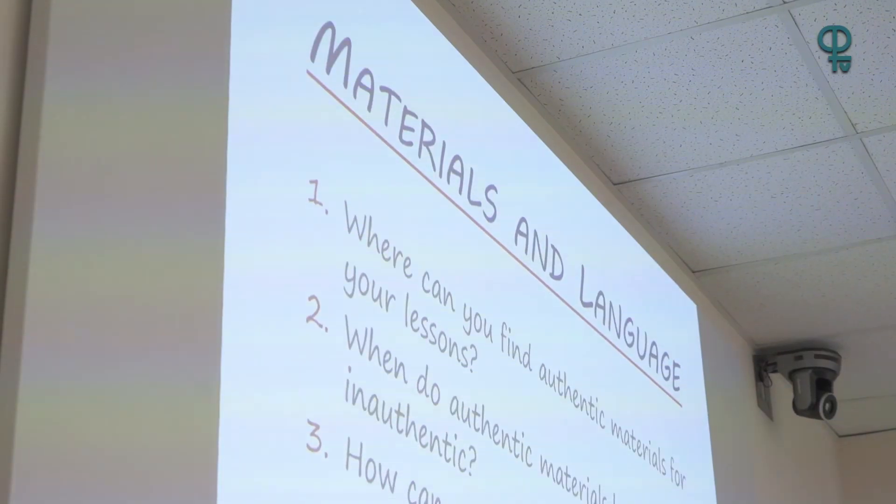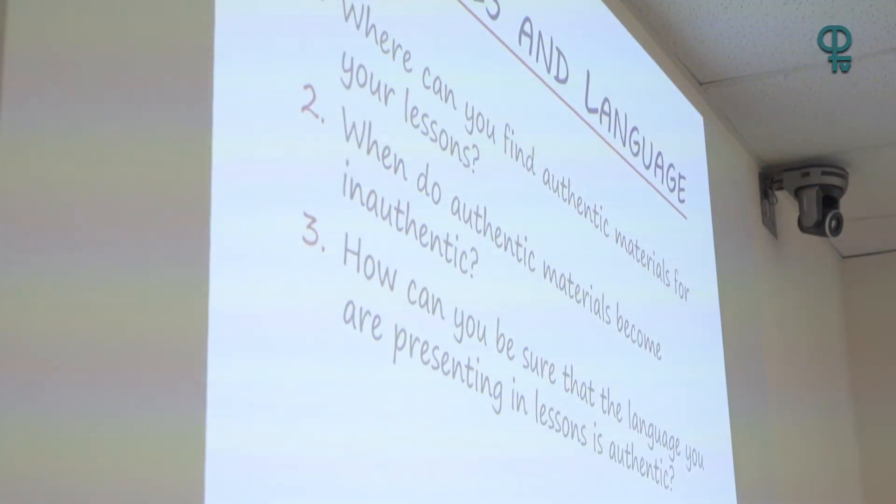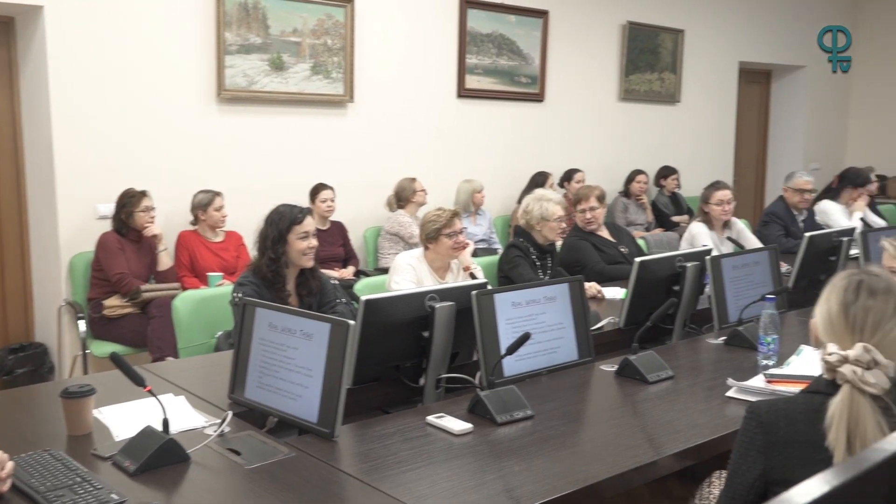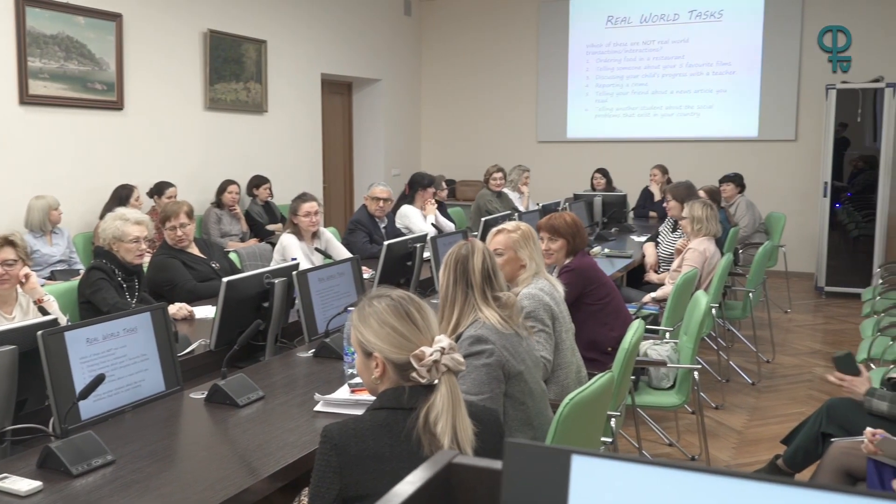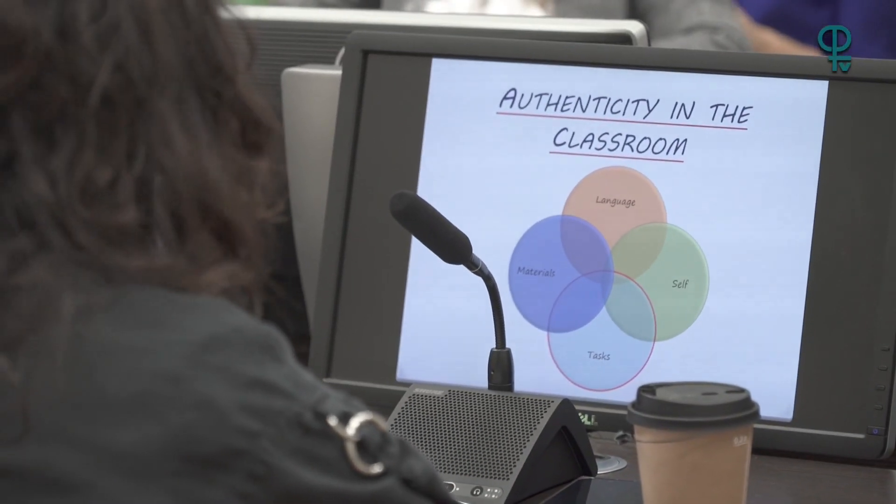Okay, thank you very much. So today we're going to look at Authenticity, particularly how to design authentic tasks for your lessons. Yesterday I spoke about what I saw as the three main strands of Authenticity. I've actually added a thought recently from discussions I've had with colleagues talking about the authentic self — bringing your real self into the classroom and getting your students to be their real selves as well, or perhaps times when you might not want to do that. Today I've highlighted the part I want to focus on, which is tasks.